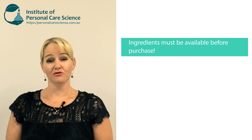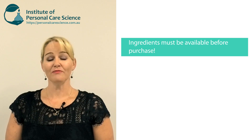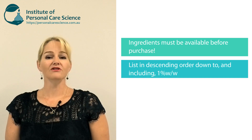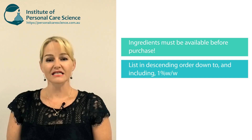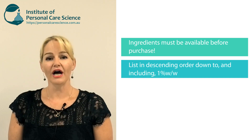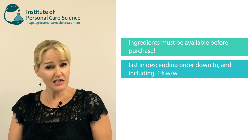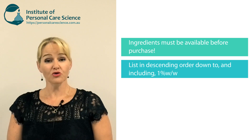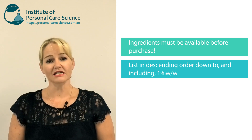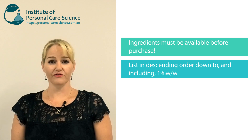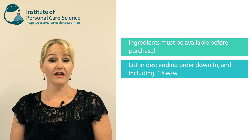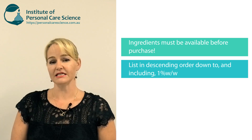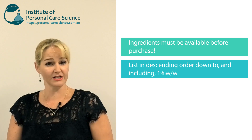The next thing you must make sure — and I do see companies get this wrong — is that ingredients must be listed in descending order down to and including the one percent point. I do want to emphasize this because I do see companies get confused and think that at one percent or less ingredients can be listed in any order. That's not correct.